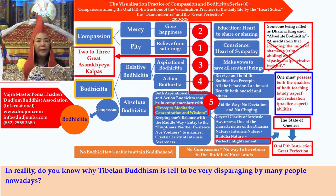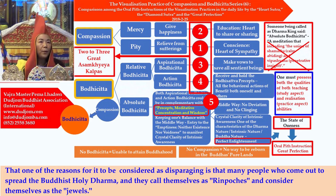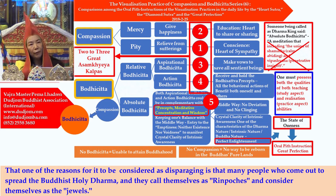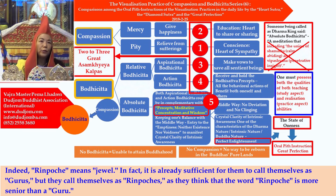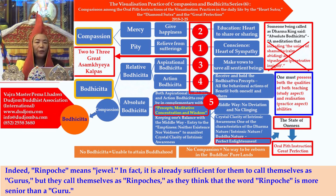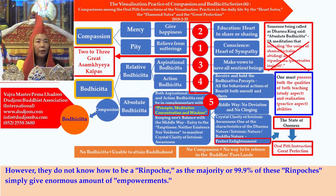Do you know why Tibetan Buddhism is felt to be very disparaging by many people nowadays? One of the reasons is that many people who come out to spread the Buddhist holy dharma call themselves Rinpoches, considering themselves as jewels. In fact, Rinpoche means jewel. It is already sufficient for them to call themselves gurus, but they call themselves Rinpoches, thinking the word is more senior. However, they do not know how to be a Rinpoche.